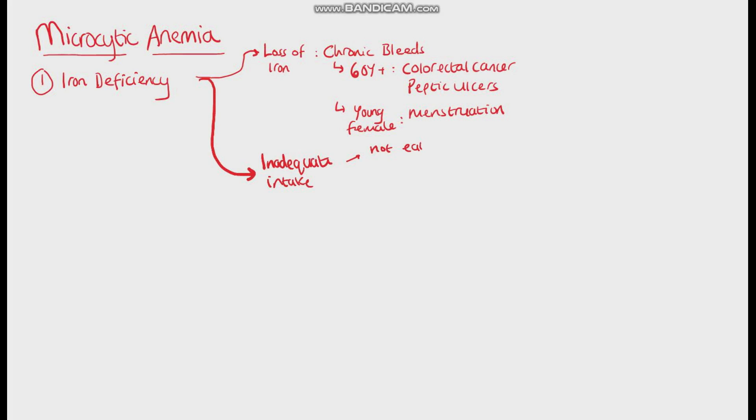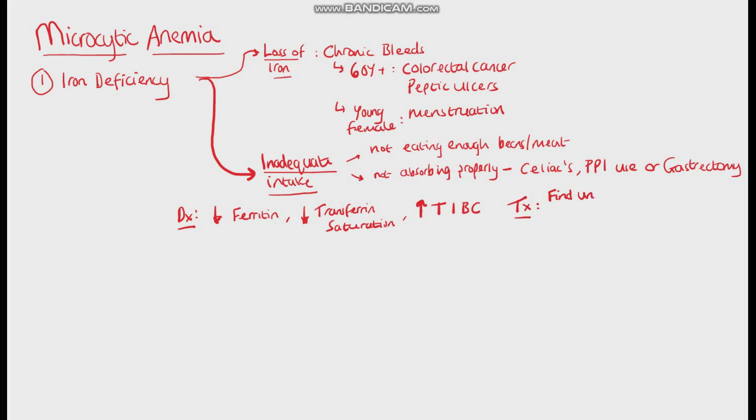For example, someone simply not eating enough beans or meat, or someone having trouble absorbing the iron, like in celiac disease. Also, iron needs an acidic environment for optimal uptake, so people using proton pump inhibitors or someone who's had a gastrectomy may also end up with iron deficiency anemia. You'll see low ferritin and transferrin saturation with a high total iron binding capacity. Treatment is usually to find the underlying cause, so to prevent the bleeding and then to give the patient iron.